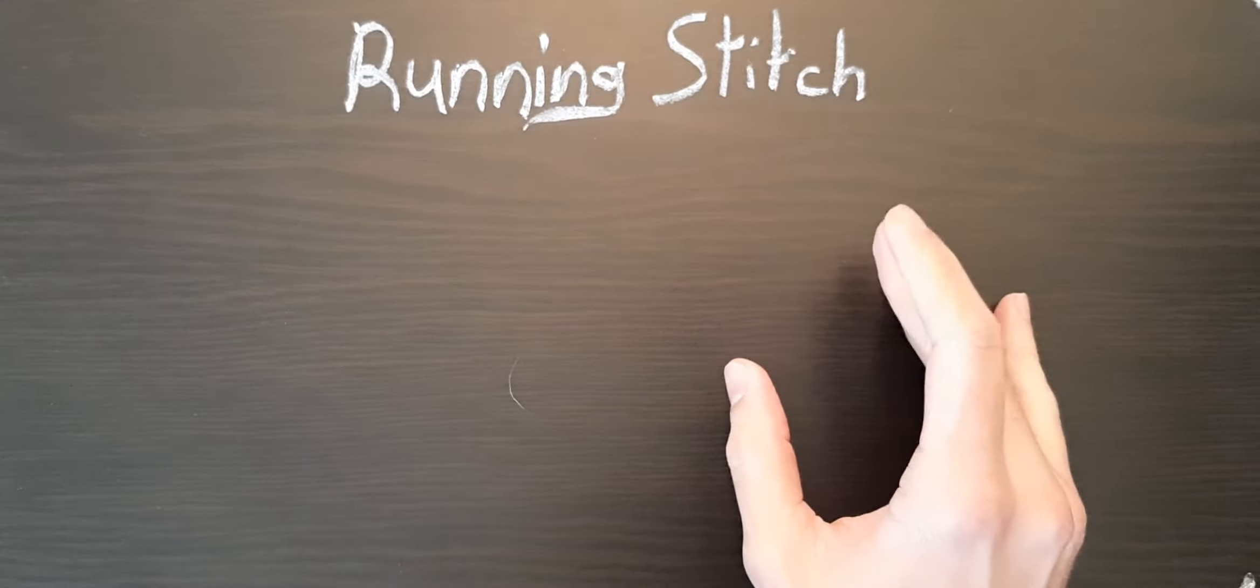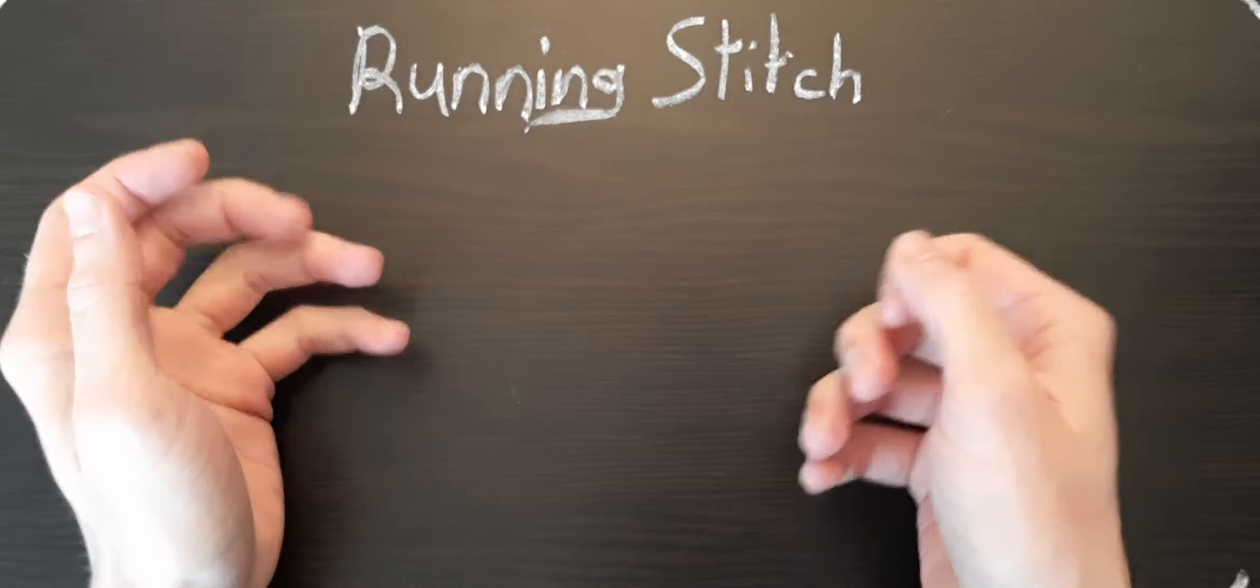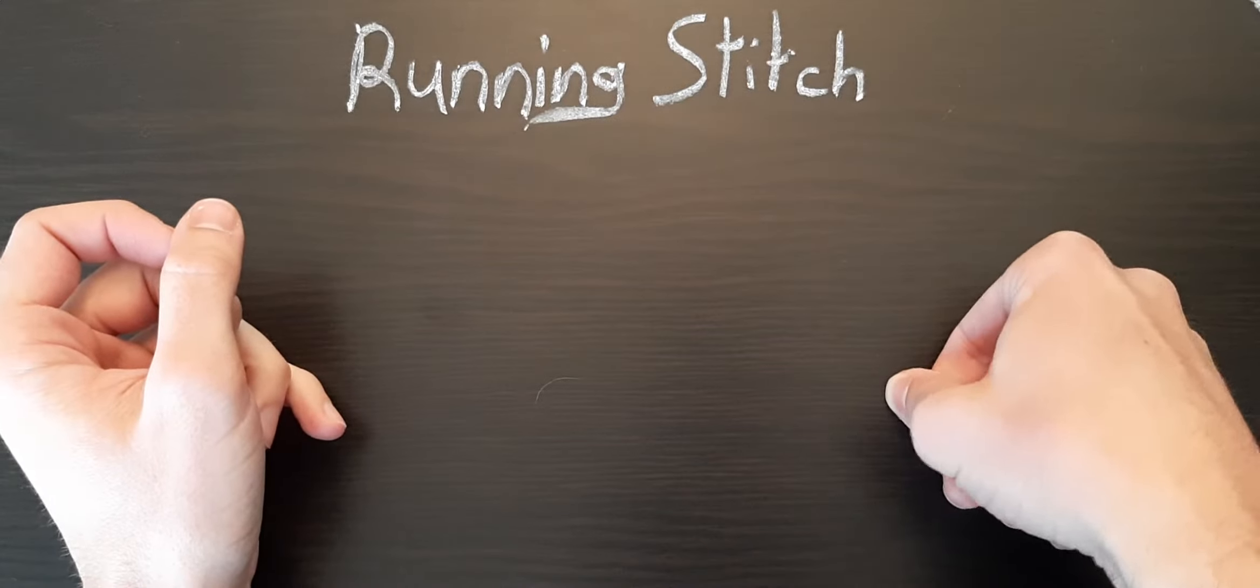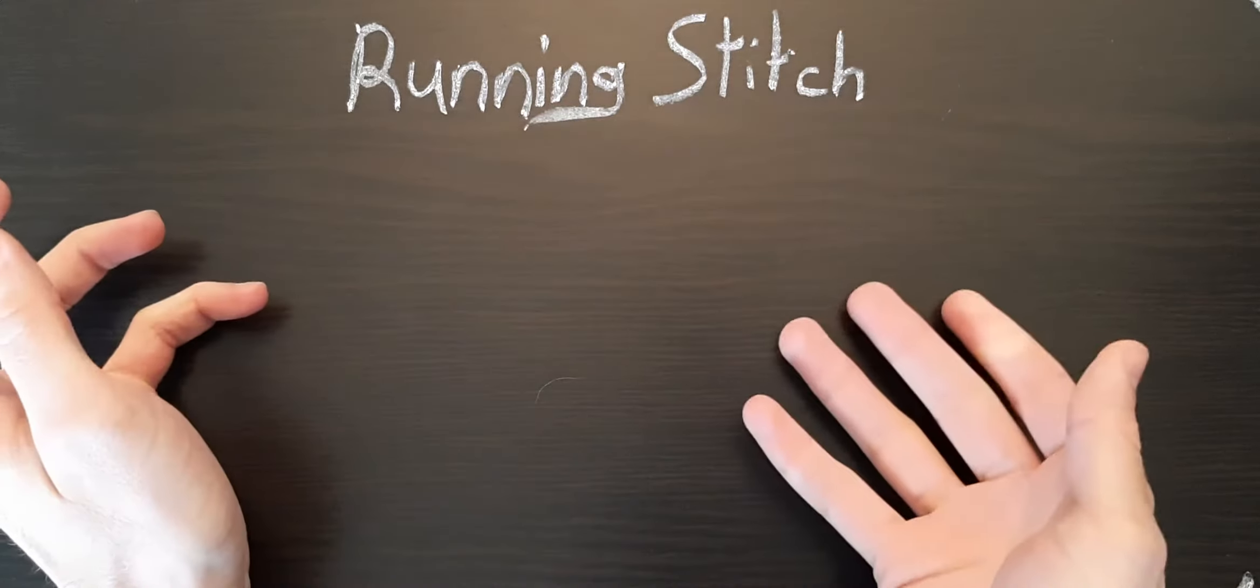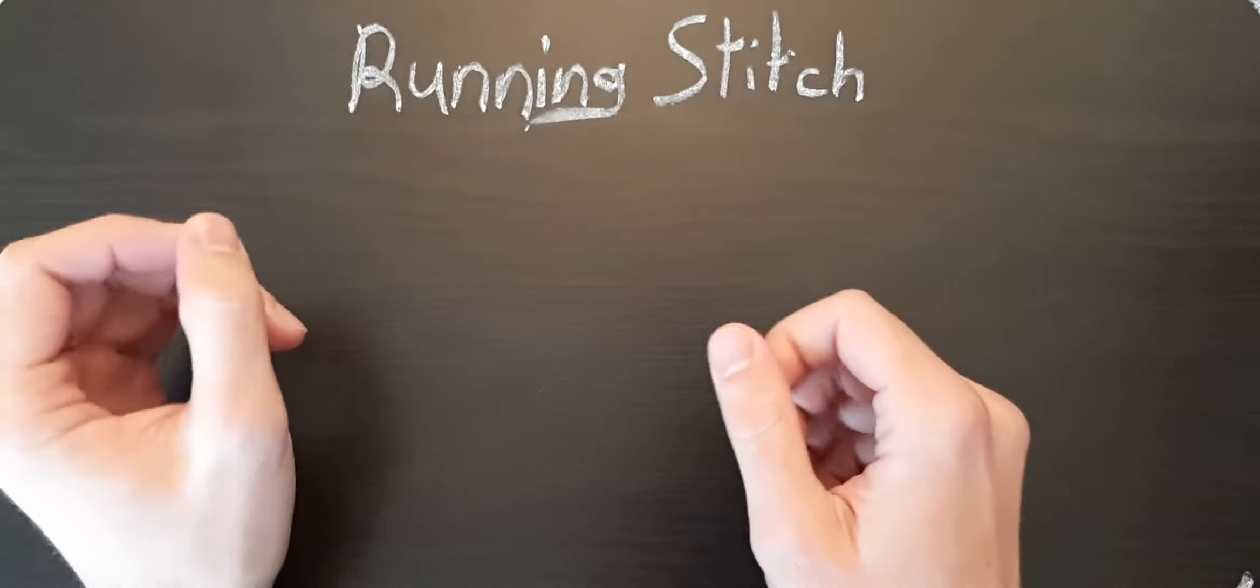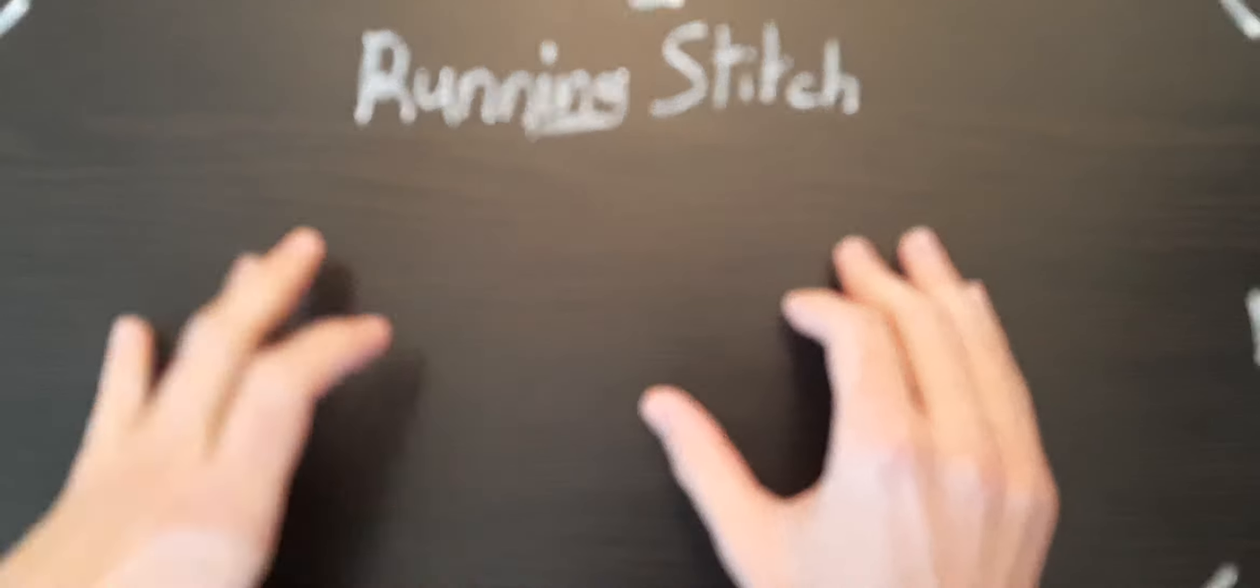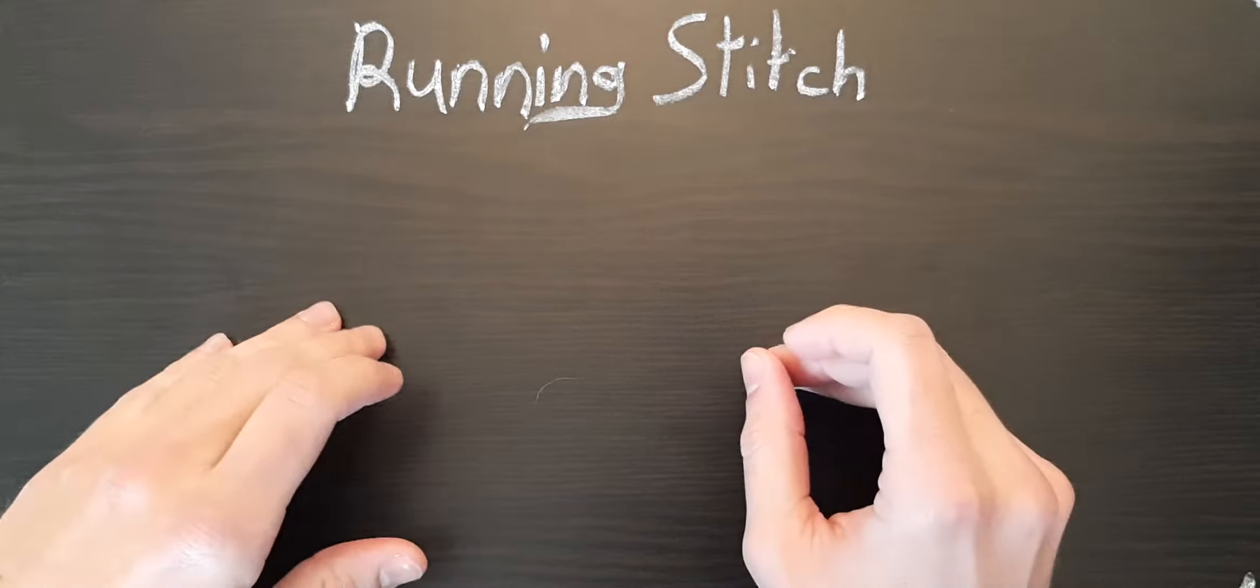This is usually a marking stitch, so it's used if you don't want to take a pencil or marking tool and actually draw on the fabric itself. You can use the running stitch to draw with thread. You can just pull the thread out once you're done and it leaves no remnants, no trace of where you had marked or what you were using to guide yourself.